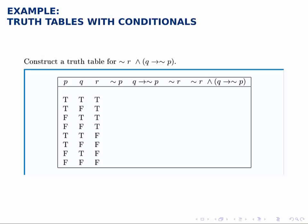Construct a truth table for this statement: not r and, in parentheses, q implies not p. This one can look complicated when you first see it, but if you break it down, you notice we have three simple statements.